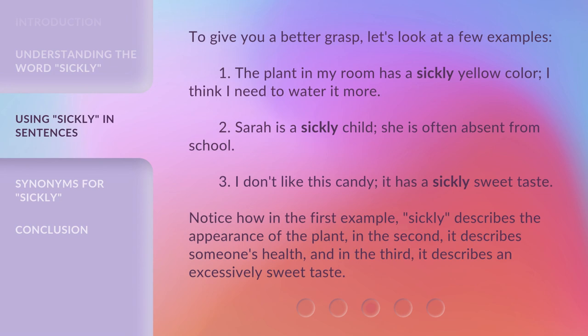To give you a better grasp, let's look at a few examples. One: The plant in my room has a sickly yellow color — I think I need to water it more. Two: Sarah is a sickly child; she is often absent from school. Three: I don't like this candy — it has a sickly sweet taste. Notice how in the first example, sickly describes the appearance of the plant. In the second, it describes someone's health. And in the third, it describes an excessively sweet taste.